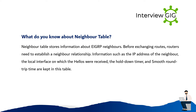What do you know about the Neighbor Table? The neighbor table stores information about EIGRP neighbors. Before exchanging routes, routers need to establish a neighbor relationship. Information such as the IP address of the neighbor, the local interface on which hellos were received, the hold-down timer, and smooth round-trip time are kept in this table.